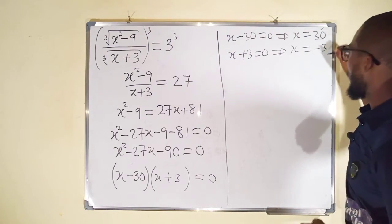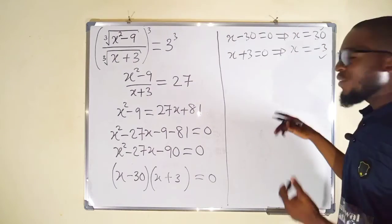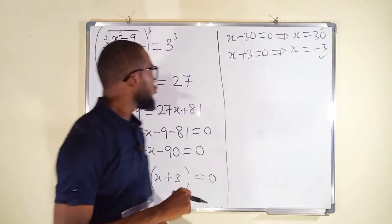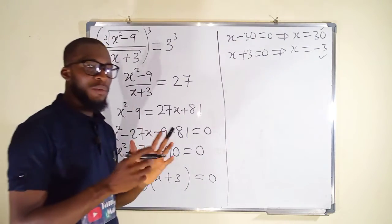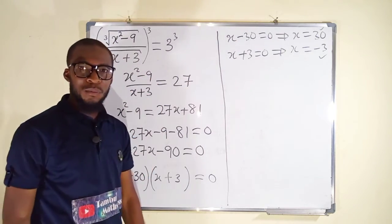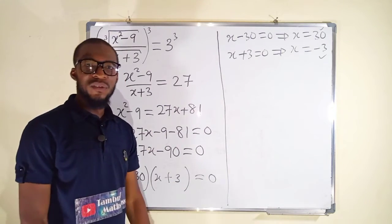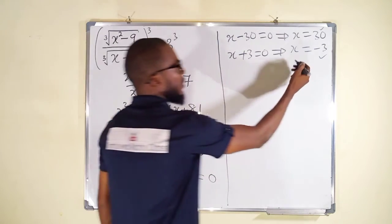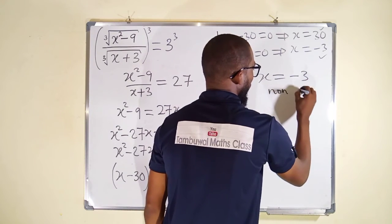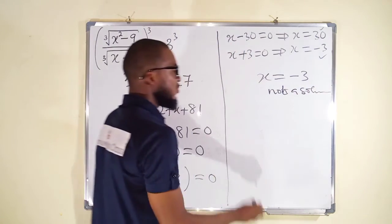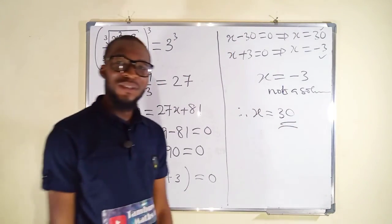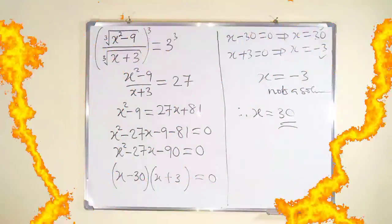We already tested x equals 30. Now let's test x equals negative 3. Negative 3 squared is positive 9, and 9 minus 9 is 0. Zero divided by anything equals 0, and the right-hand side is not 0, so x equals negative 3 is not a solution. Therefore, the only real value of x is 30. And this is all I have for you today — thank you for watching, do have a nice day.